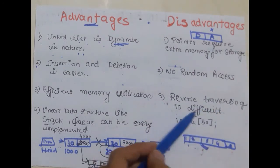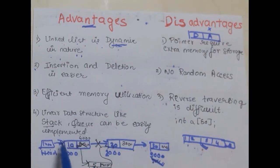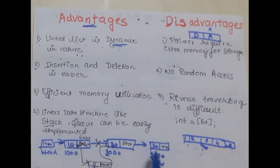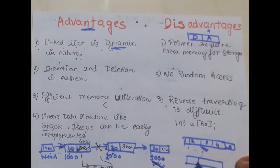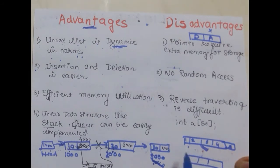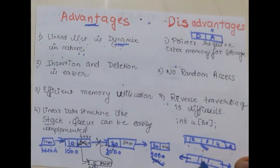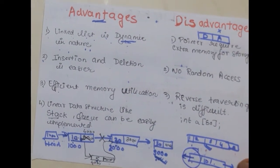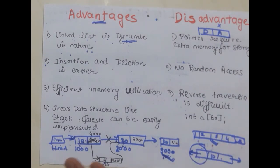The third disadvantage is that reverse traversing is difficult — backtracking is difficult. It is easy to go forward, but going from 30 to 20 to 10 is very difficult. Even with a doubly linked list, reverse traversing is difficult because the doubly linked list node has three fields: a field pointing to the previous node, a field pointing to the next node, and a data field — meaning extra pointer fields waste even more memory. So these are the various advantages and disadvantages of linked list.